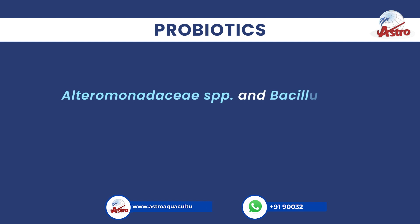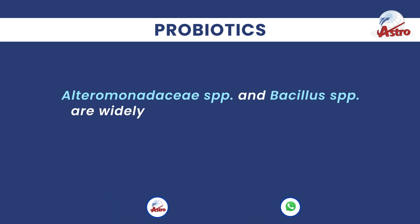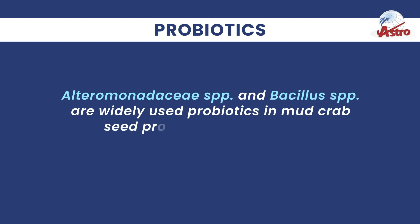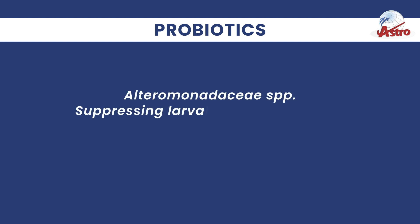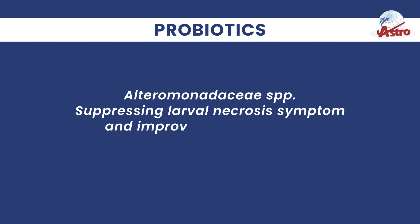Alteromonadaceae species and Bacillus species are widely used probiotics in mud crab seed production and farming. Alteromonadaceae species suppress larval necrosis symptoms and improve larval survival.